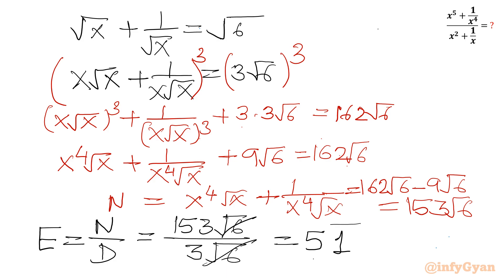Now let us calculate the required expression. E equals numerator over denominator: 153 root 6 divided by 3 root 6. The root 6 cancels, giving us 51. So our final answer is 51. Thank you so much for watching, friends. Do not forget to like, share, and subscribe. Bye bye till next video. Good luck, take care of yourself.